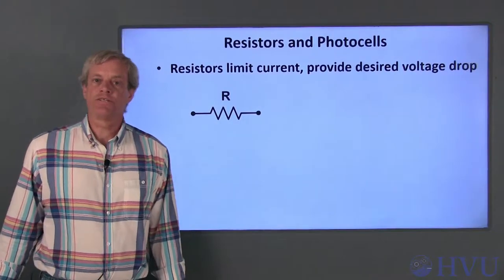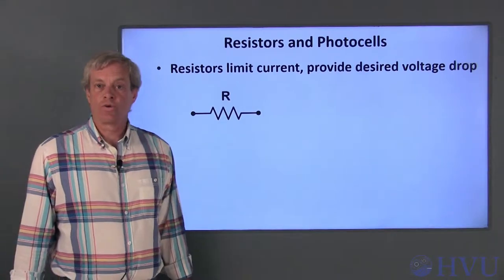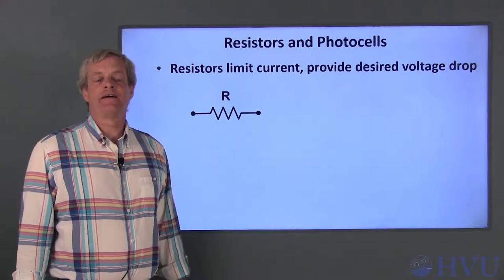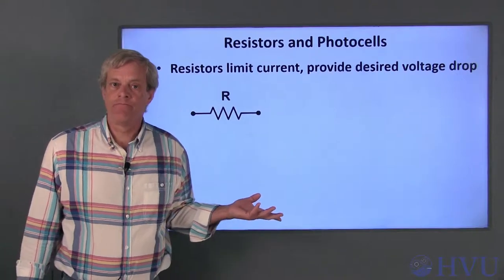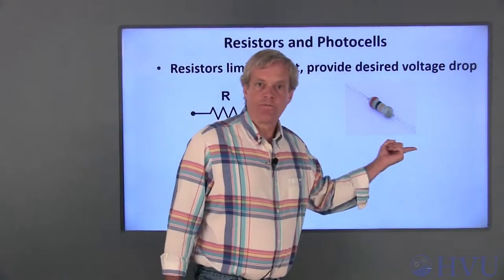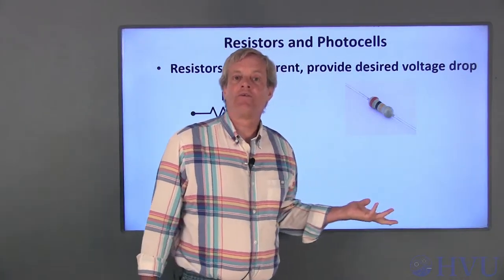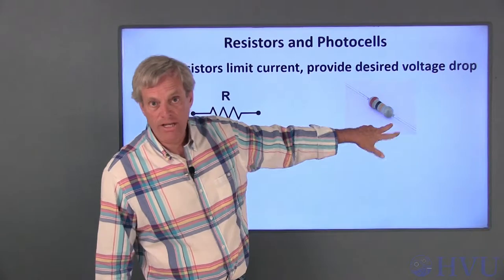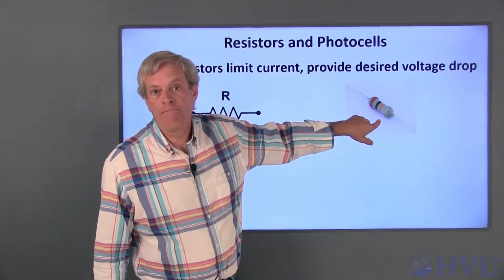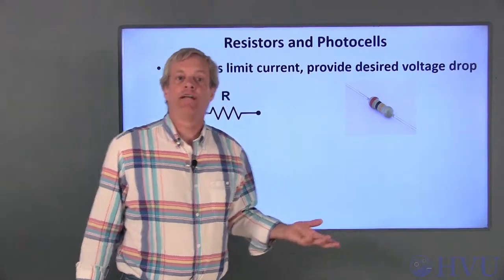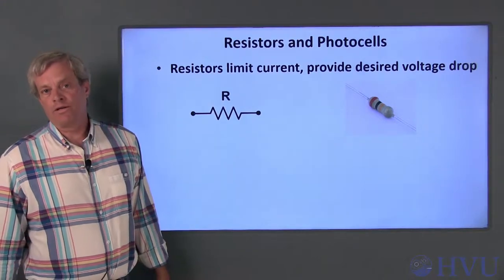The first step in circuit construction is to identify the components that we need. Resistors are used to control current flow or to provide a desired voltage difference. This jagged line is the circuit symbol for a resistor. This is what the resistors we'll use in our circuit look like. They have two terminals, and it doesn't matter how the terminals are oriented — you can swap them end for end without affecting the resistor behavior. The resistors have a set of color-coded bands on them that provide a code giving the resistance value of the resistor.